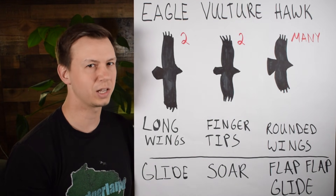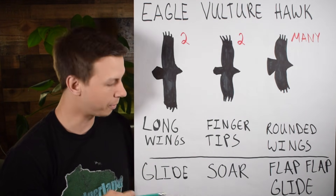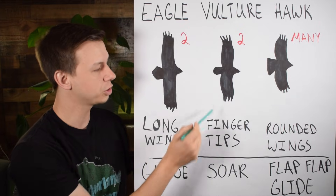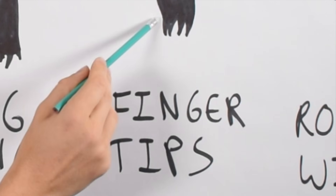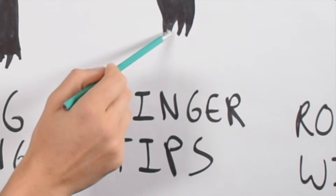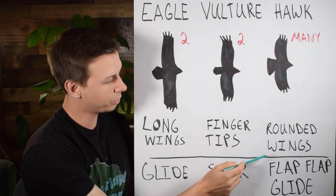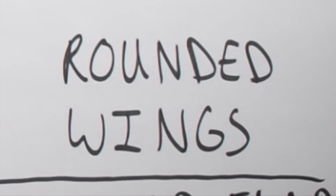Some specific things to remember: eagle — long wings; vulture — fingertips that may point backwards; and the hawk — rounded wings.